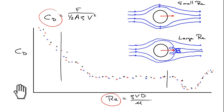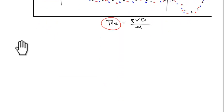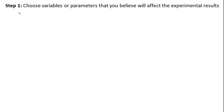To figure out these dimensionless parameters we'll use what's known as the Buckingham Pi Theorem. The first step, which is often the hardest step, is to choose variables or parameters that may affect the experimental results. This is challenging because it's hard to see at the beginning. What we ultimately want to measure is the force of drag, and the parameters that might affect it: the velocity of the fluid, the viscosity of the fluid, the density of the fluid, and the diameter of the sphere.